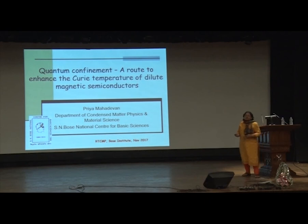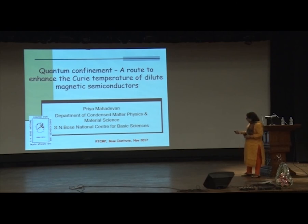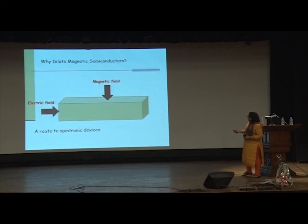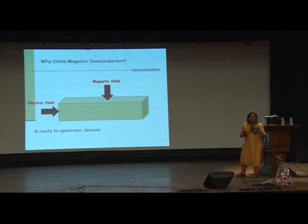What I'd like to explore in this talk is whether we can increase — basically, if you want to manipulate the spin degree of freedom of the electron, you would like to have the spin degree of freedom available at operating temperatures, which are typically room temperatures. That's why I'd like to explore quantum confinement as a route to enhance the Curie temperature of these materials. In contrast to current electronic devices where you use an electric field to manipulate charge, you'd also use a magnetic field to manipulate the spin degree of freedom, and this has been a conceptual route toward spintronic devices.